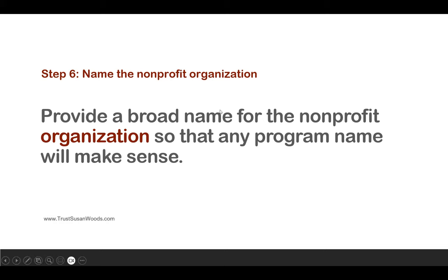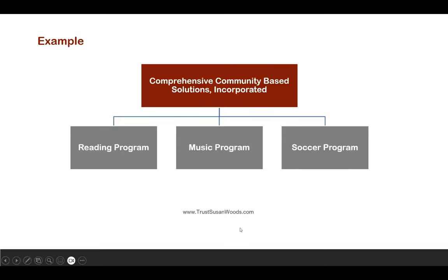Let me show you an example. The name of the organization is Comprehensive Community-Based Solutions Incorporated. You're going to have 'Incorporated' at the end of a name if it's a 501c3 nonprofit organization, because you have to incorporate it on a state level in order for the IRS to approve it on the federal level. So this name, Comprehensive Community-Based Solutions Incorporated, is a broad name for a nonprofit organization.